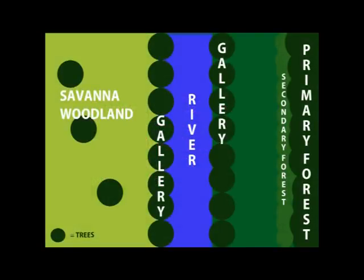This slide shows a simple diagram of different forest and woodland habitat types. The green circles represent the density of trees. Savannah woodland is open and flat tropical grassland with varying amounts of trees and seasonal rainfall. In the centre of the diagram is a river which has gallery forest either side of it. Gallery woodland can be found along streams and rivers.